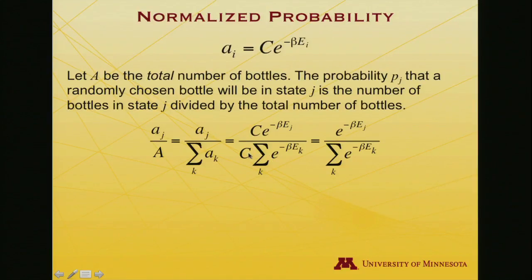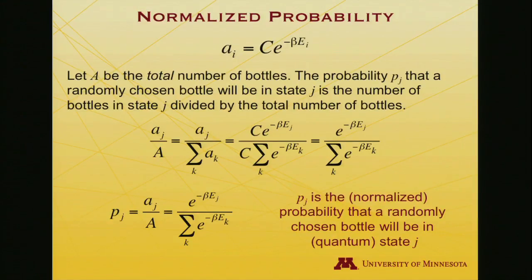So the two C's will cancel one another, and I'm left with e to the minus beta e sub j above, and sum over all possible states e to the minus beta e sub k below.